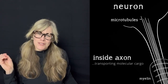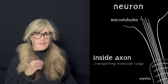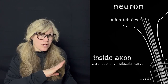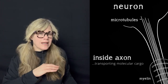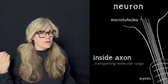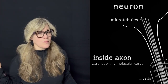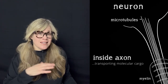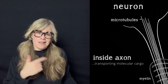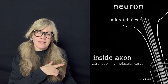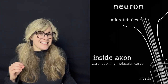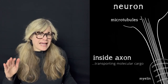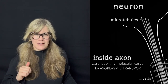The axon's intracellular physiology is incredibly dynamic and involved in transporting molecular cargo from and to the soma. Because the end of the axon — which is the end of the neuron — can be quite a distance from the cell body or soma, there needs to be a way to get things that are produced in the soma to the other end of the neuron. This is accomplished by a process called axoplasmic transport.